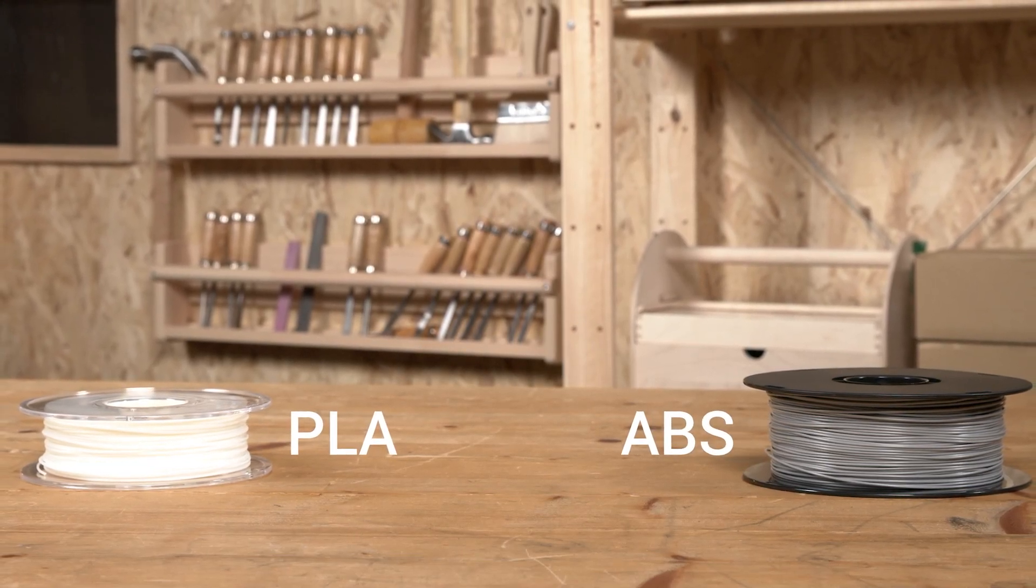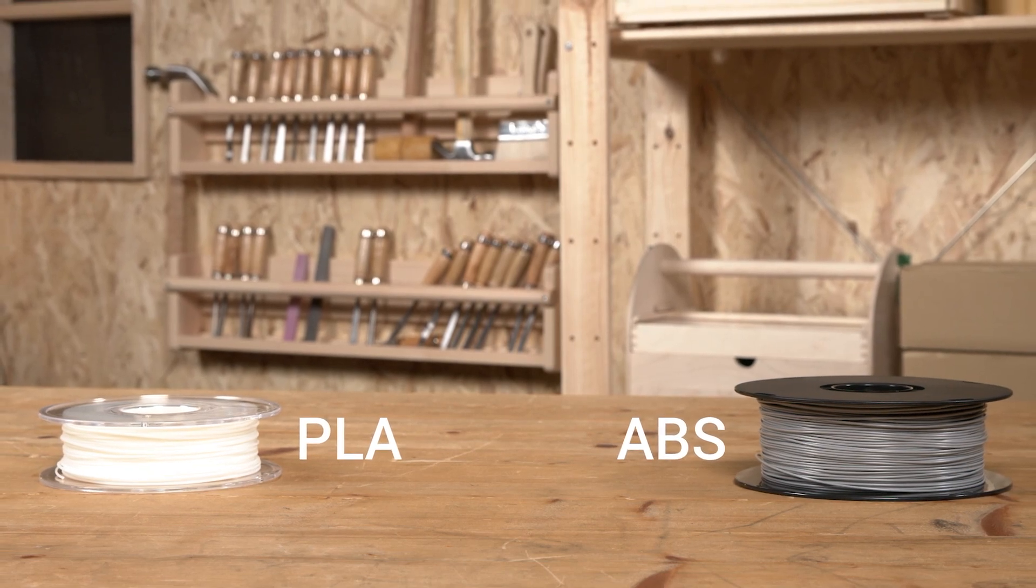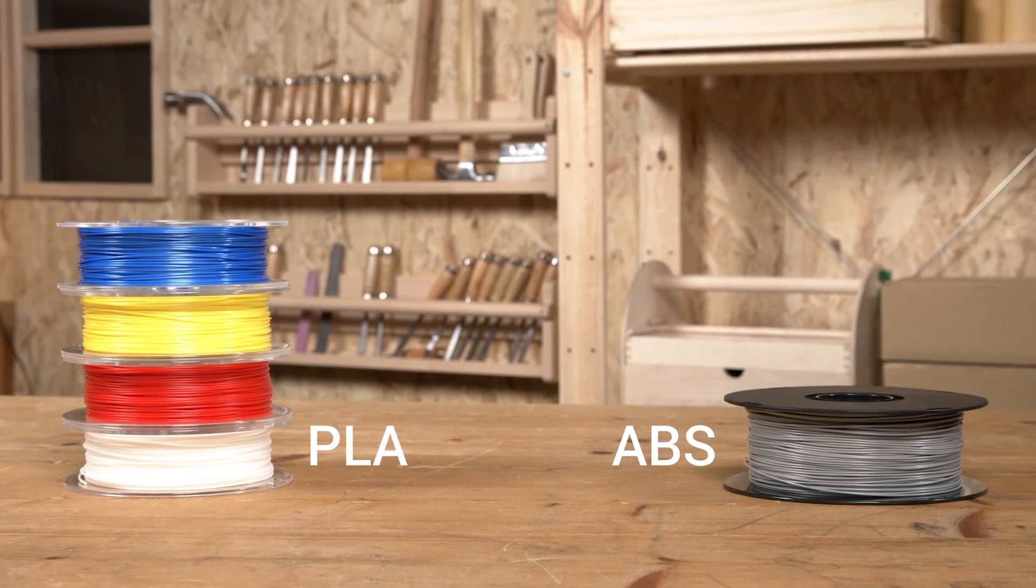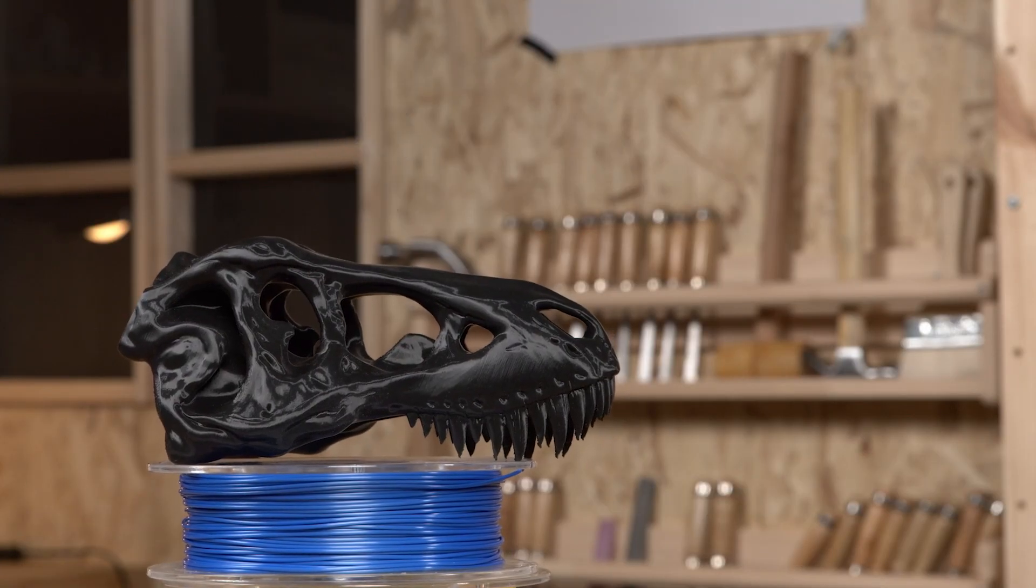Though PLA and ABS are said to be the most used types of materials in 3D printing, most of us take PLA as our go-to filament. It's cheap, easy to print with, also available in so many colors, and creates strong prints with nice look.